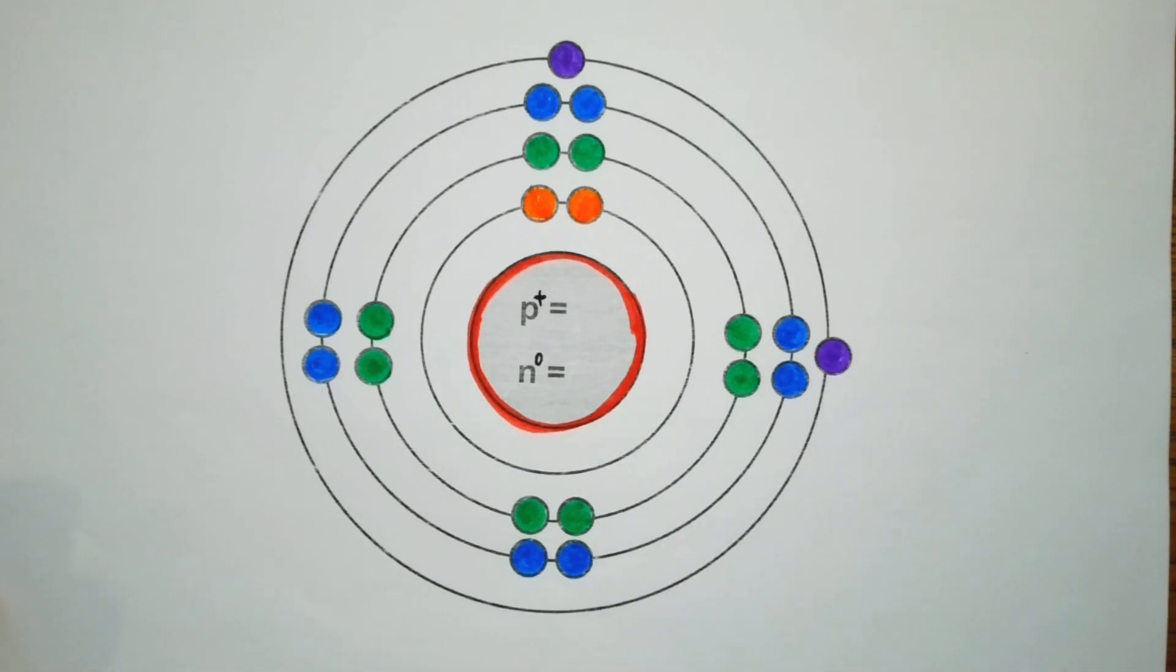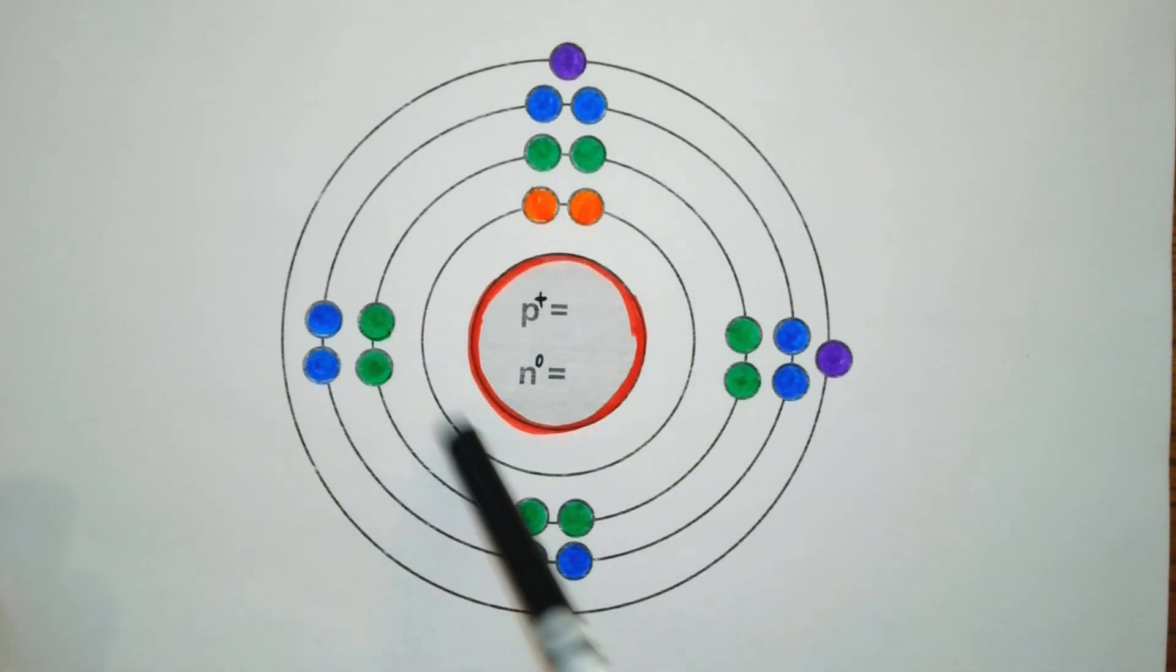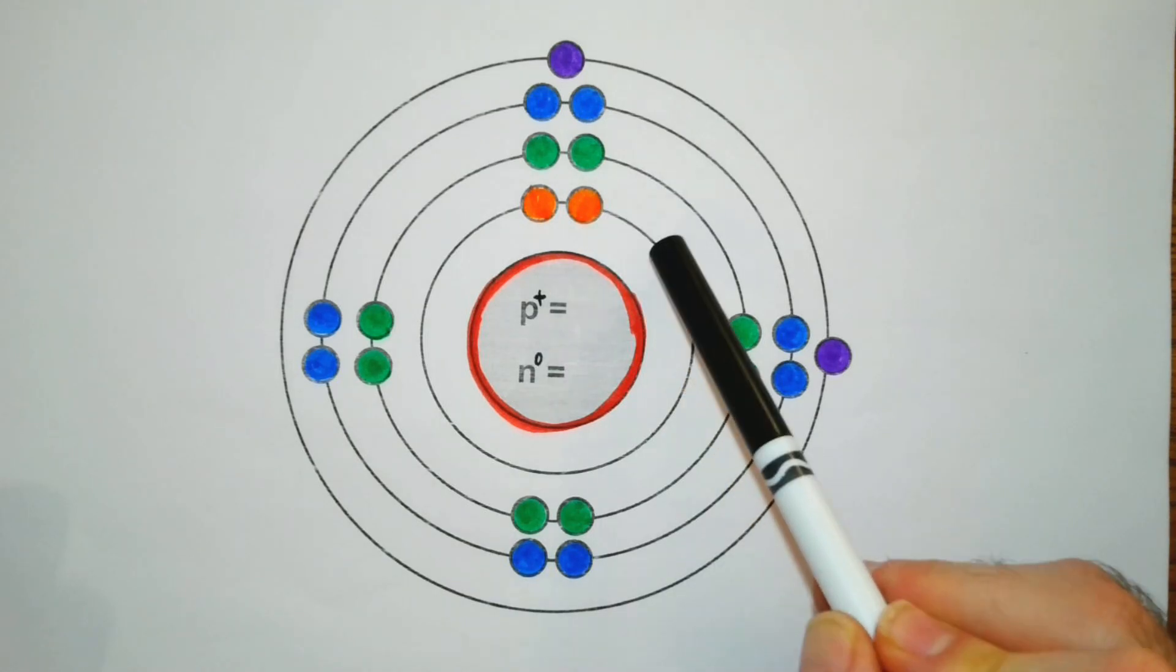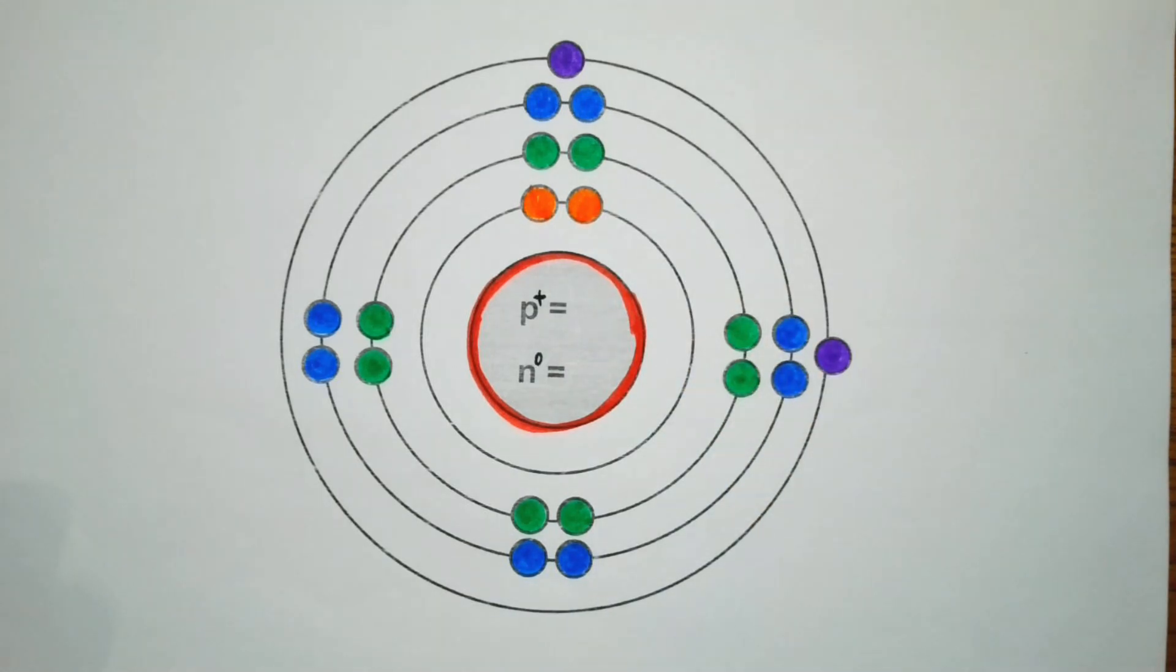Electrons orbit the nucleus in something that we call orbitals or shells. This first shell or orbital can hold a maximum of two electrons. These electrons don't pair until they have to, and in this shell they pair on the second one.